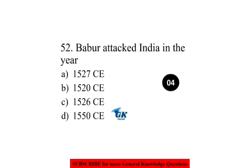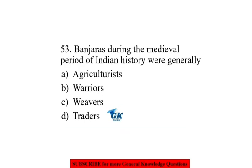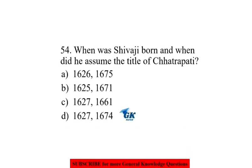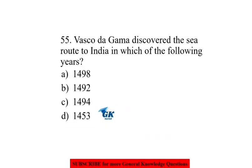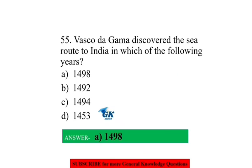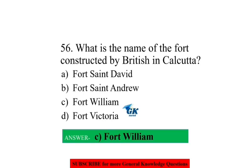Babur attacked India in the year 1526 CE. Panjaras during the medieval period of Indian history were generally traders. When was Shivaji born and when did he assume the title of Chhatrapati? Born in 1627 and assumed the title in 1674. Vasco da Gama discovered the sea route to India in 1498. What is the name of the fort constructed by the British in Calcutta? Fort William.